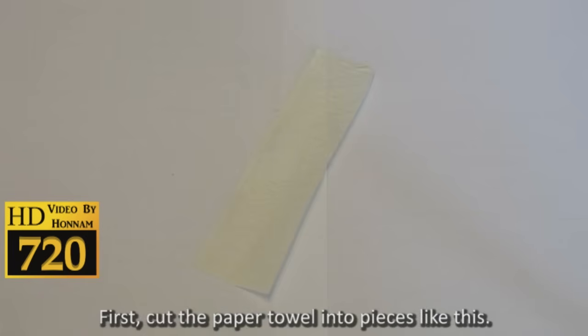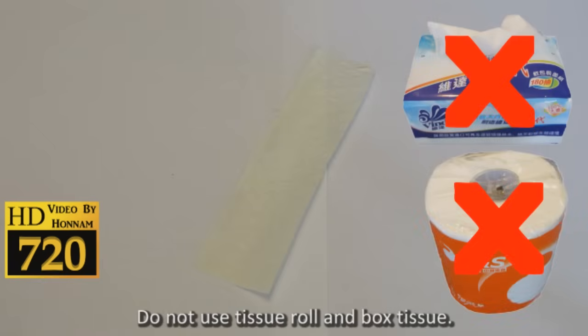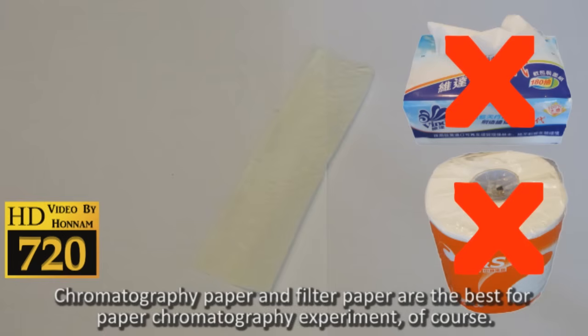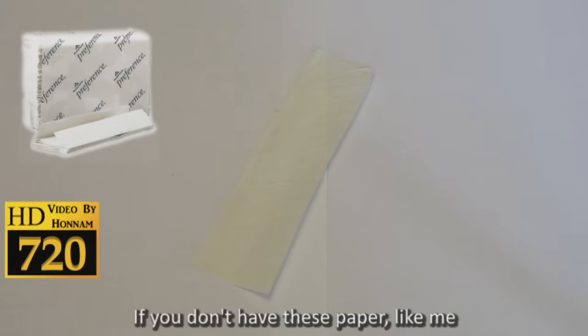Do not use tissue roll and box tissue. Chromatography paper and filter paper are the best for paper chromatography experiments. Of course, if you don't have these papers like me, you can use white multi-fold towel paper because it is thicker than normal tissue paper.